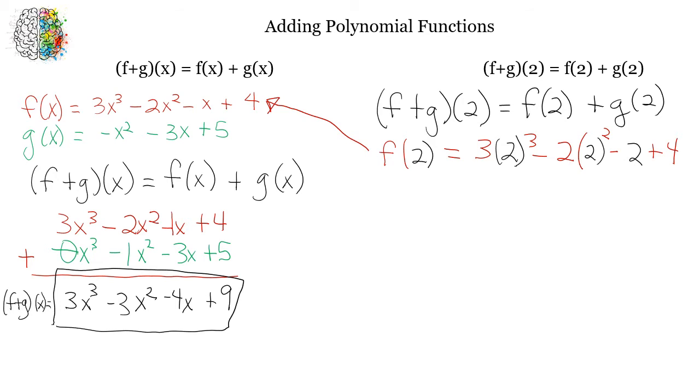And that's going to be squared minus 2 plus 4. So you can see I'm taking this original equation, and then everywhere that there's an x, I've replaced that with the number 2. So let's go ahead and solve that out. 2 cubed is 8 times 3 is 24, minus 2 times 2 is 4, times 2 is an 8,